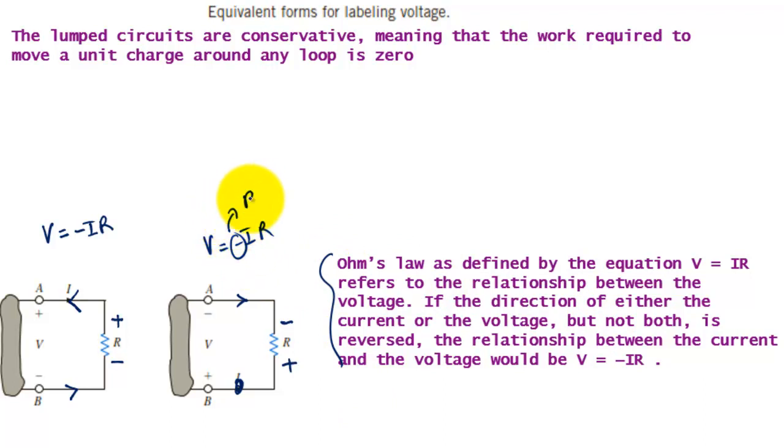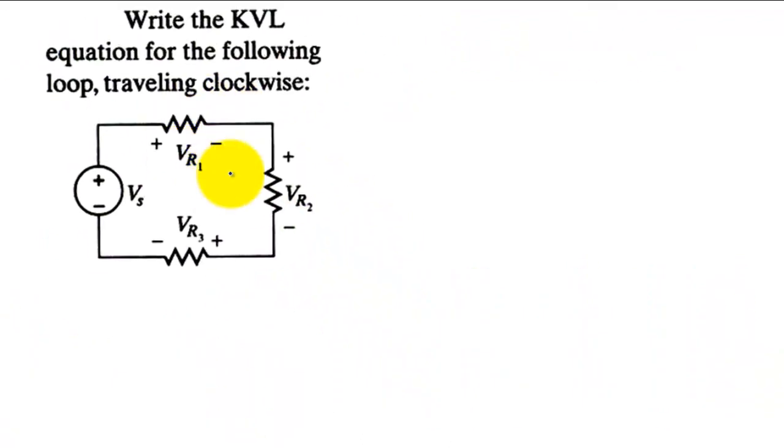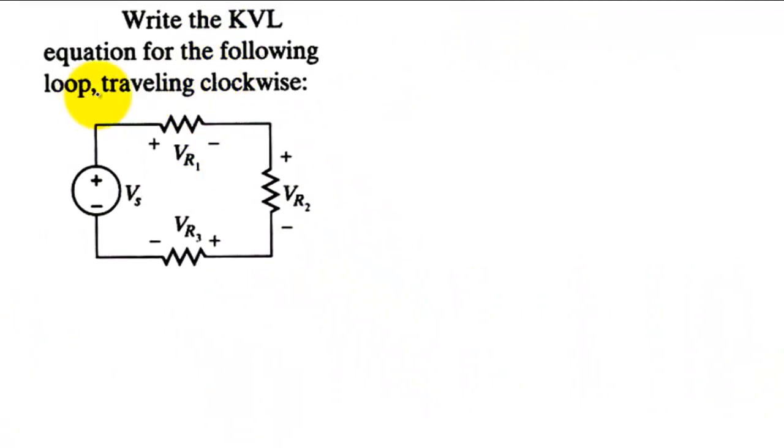Write the KVL equation for the following loop traveling clockwise. So I have to have this direction mentioned here, the right direction.